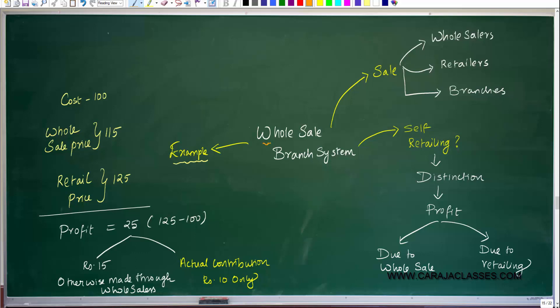In this session, let us understand what is the wholesale branch system. We are talking about dependent branches, and there are various methods — four methods — and one of them is the wholesale branch system. Branches or branch organizations would generally sell their goods through wholesalers and then through retailers. When they sell through wholesalers, the selling price will be lesser, but when they sell through retailers, the selling price will be more.